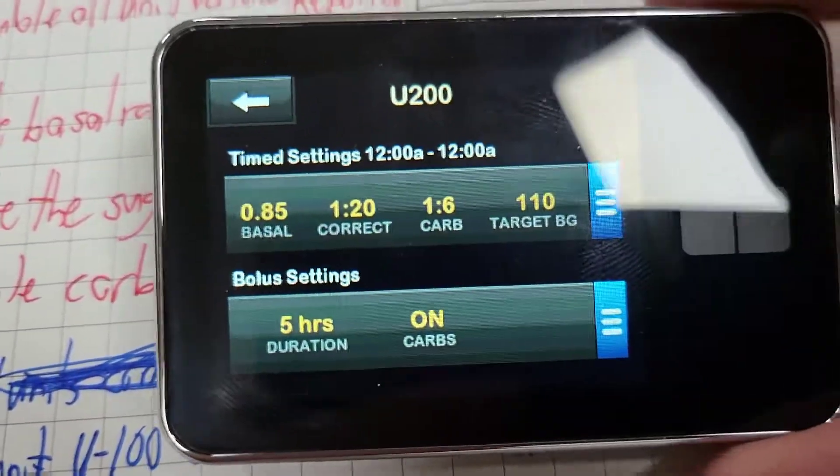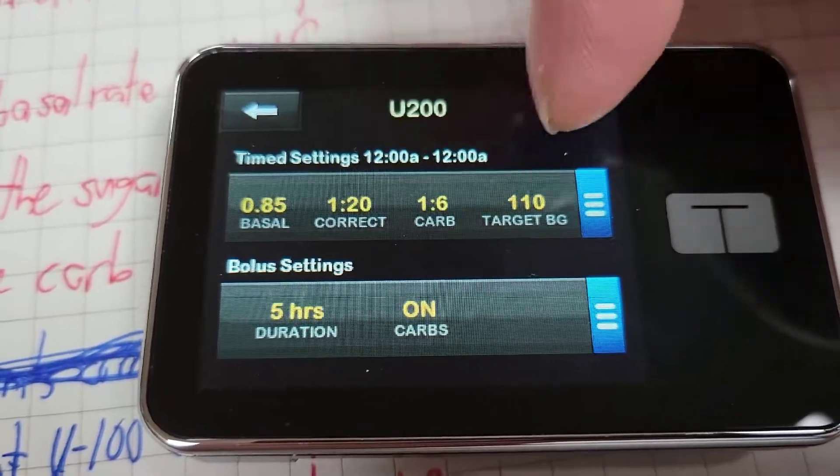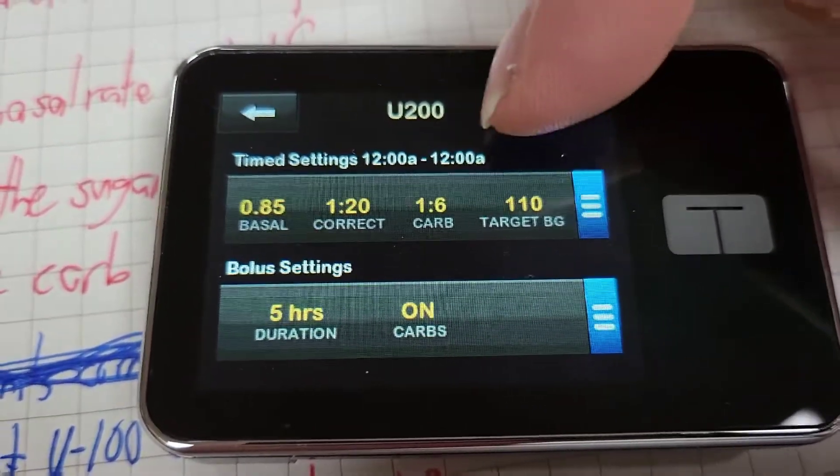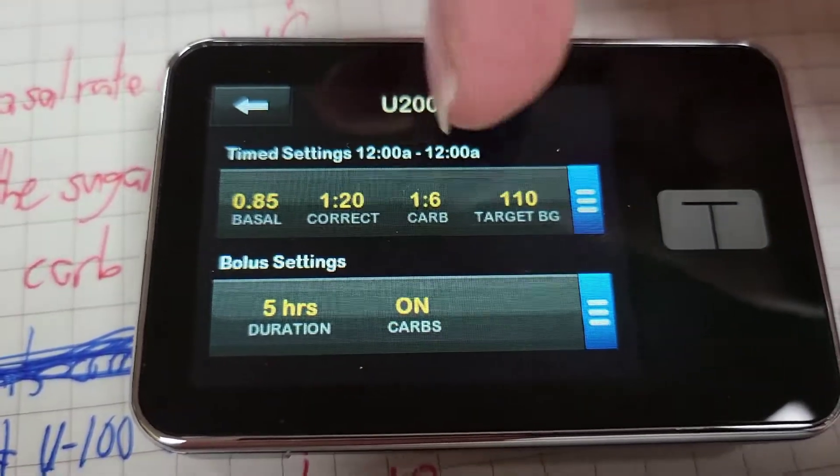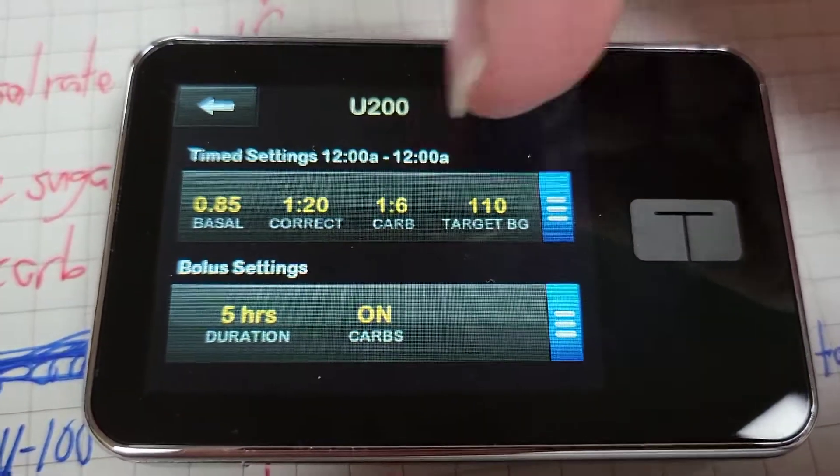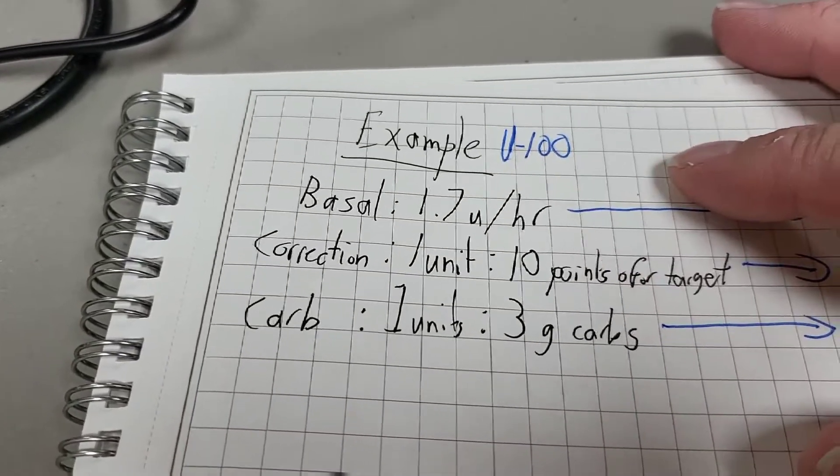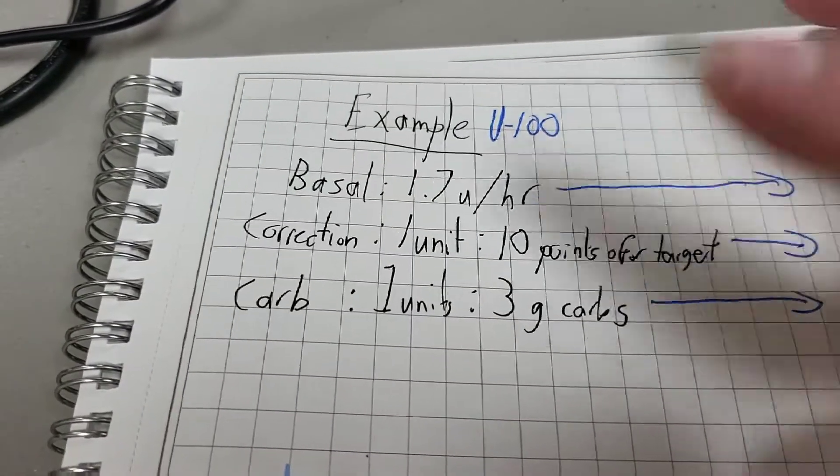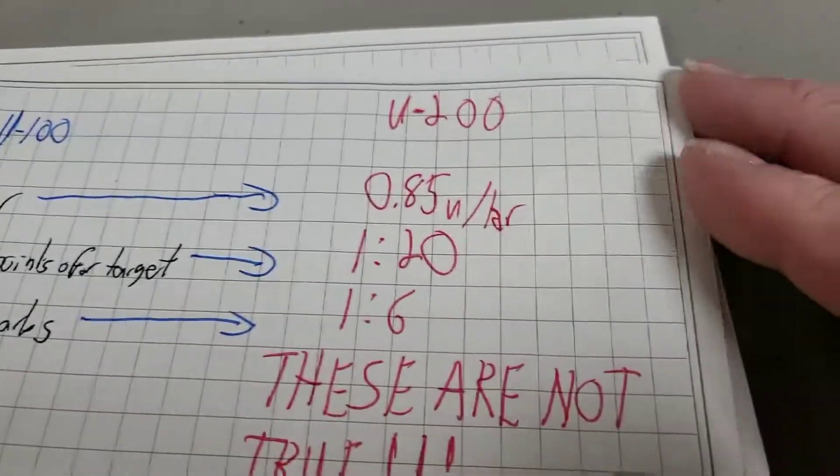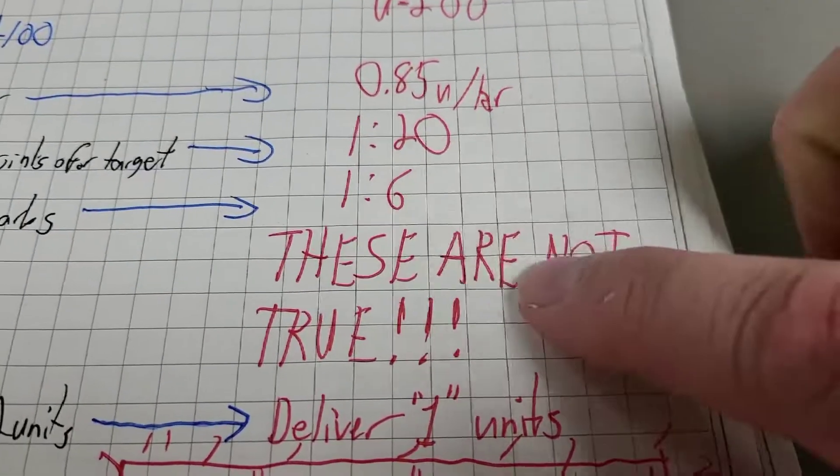Here you can see my U200 settings. All of these numbers are not actually my values. Well, except the target value is accurate. 0.85 is half. 1 to 20, that should be 1 to 10. My actual basal rate is, at least right now, it's at 1.7 units per hour. Correction is 1 to 10. Carb is 1 to 3. Using U200, it's 0.85, 1 to 20, and 1 to 6, but these are not true.